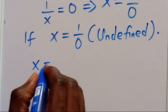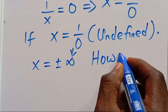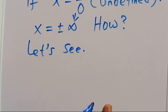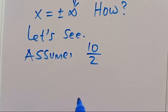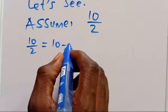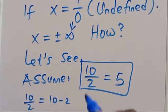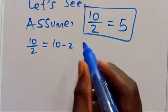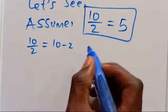So we can also say x is positive or negative infinity from this. To prove that, assume we have 10 divided by 2. We have 10 divided by 2 equals 10 minus 2, giving us 8, because 10 divided by 2 equals 5, and that's the analysis of everything.